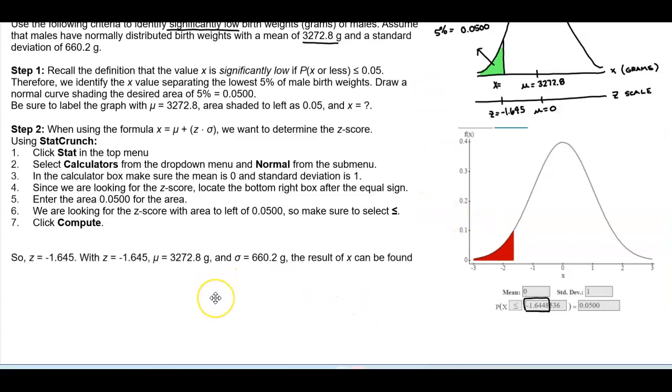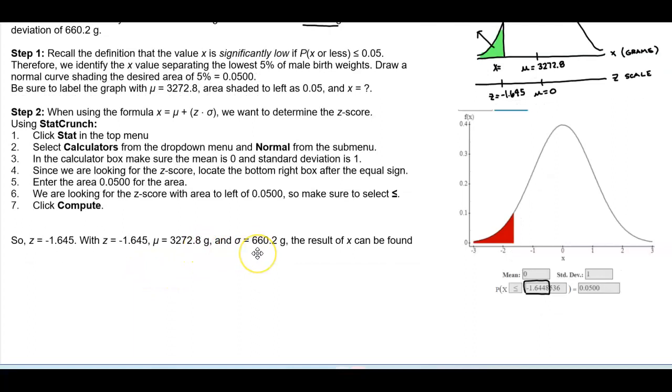So now that we found that Z score, we can use that Z score in addition to the mean and the standard deviation to find the result of X. So we can use that formula now.